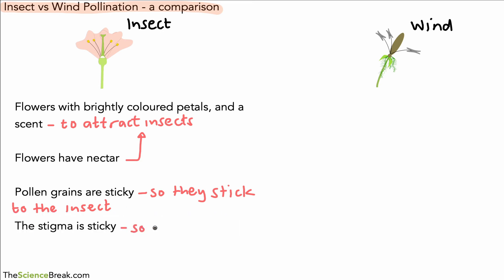And the stigma, the female part of the plant, is often sticky so that the pollen, when it arrives on the insect, sticks to it, and this helps with the process of pollination. For our wind pollinated plants, we have small dull petals or no petals on the flowers.